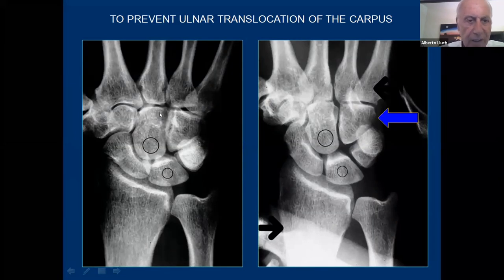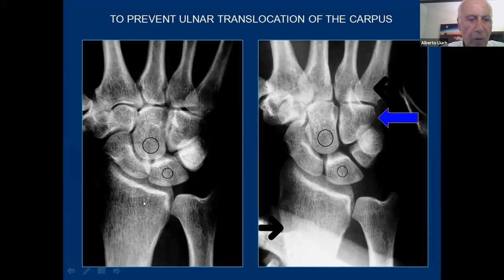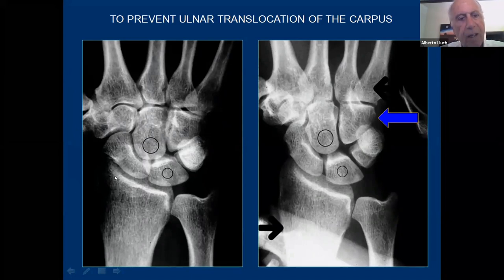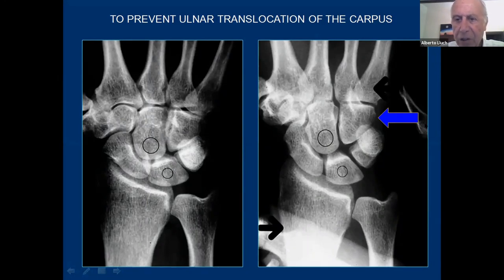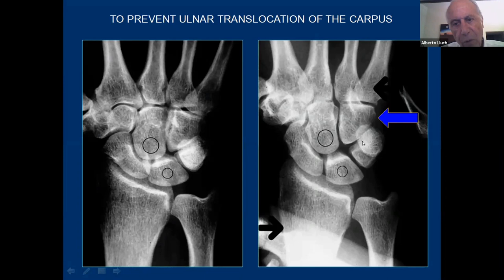If we examine a wrist at rest, we see it aligns with the center of the head of the capitate coming a little bit towards the ulnar side of the midline of the radius. If we try to push the wrist towards the ulnar side, we will not be able to move it completely because of the ligament orientation. But if the person is relaxed and not contracting the muscles, we can push the wrist towards the radial side until the ligaments become tight. We can move the wrist towards the radial side, but not towards the ulnar side.